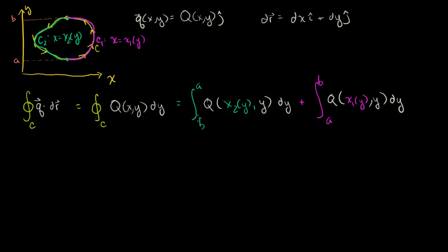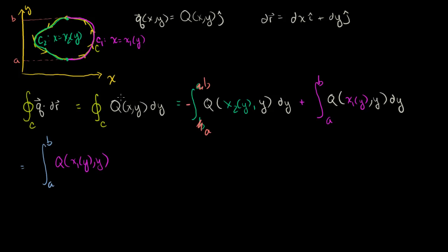We don't like the larger number on the bottom, so let's swap those around. If you swap the limits from b-to-a to a-to-b, that makes it the negative of the integral. Now that we have the same boundaries of integration in both definite integrals, we can write them as one: the integral from a to b of Q(x1(y), y) minus Q(x2(y), y) dy.